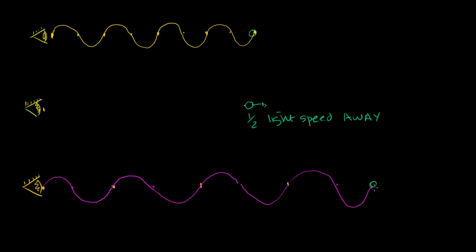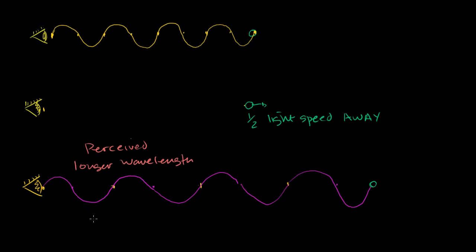The only difference is this source is moving away from me, or I'm moving away from it, depending on how you want to view it, while in the first case the observer and the source are both stationary. My eye will get each of these successive wave trains and say there's a longer wavelength here — a perceived longer wavelength and a perceived lower frequency.